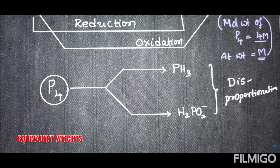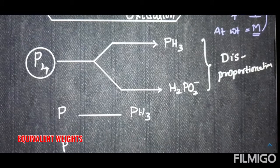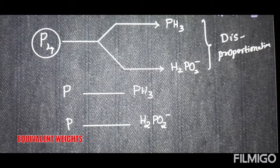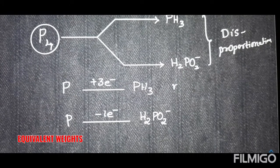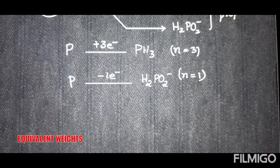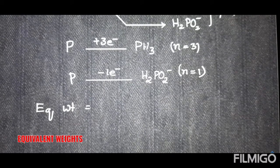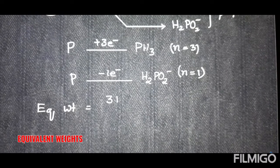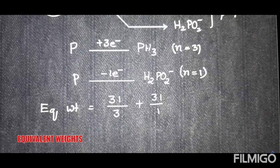To calculate the equivalent weight for a disproportionation reaction: one phosphorus changes to PH₃ — the oxidation state goes from 0 to −3, so it gains three electrons; n-factor = 3 for this half reaction. Another phosphorus changes to H₂PO₂⁻ — oxidation state goes from 0 to +1, it loses one electron; n-factor = 1 for this half reaction.